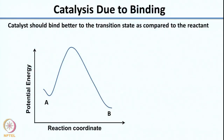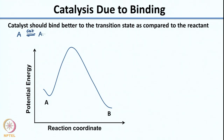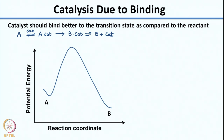Typically alpha and beta values lie between 0 and 1. Now we will move on to other types of catalysis. The first we will cover today is catalysis due to binding. We can express catalysis due to binding using a generic equation: the reactant A binds to the catalyst to form a complex, which is then converted to product B still bound to the catalyst, and ultimately you get B plus catalyst released.